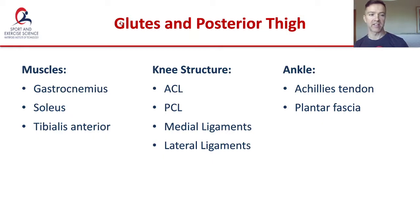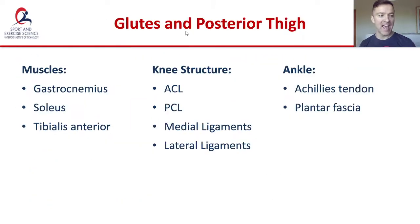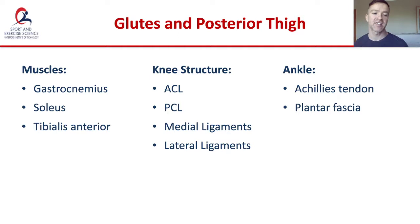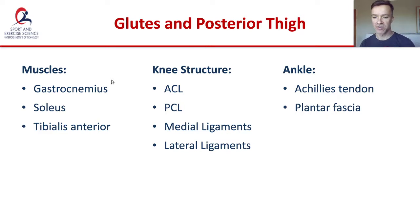What we're going to do today is look at a couple of muscles: the gastrocnemius, the soleus, and the tibialis anterior — all muscles in the lower leg. We're going to look at some specifics of the knee, including the cruciate ligaments — the ACL and PCL — and the medial and lateral collateral ligaments. We'll also look at some structures around the ankle and foot: the Achilles tendon and the plantar fascia.